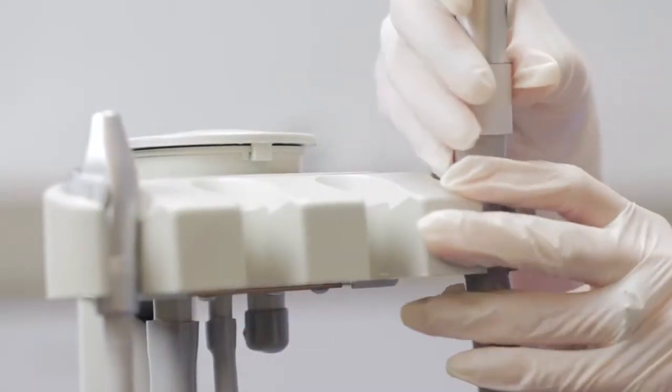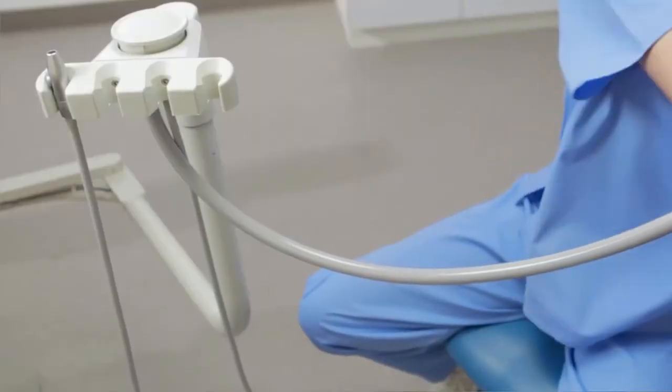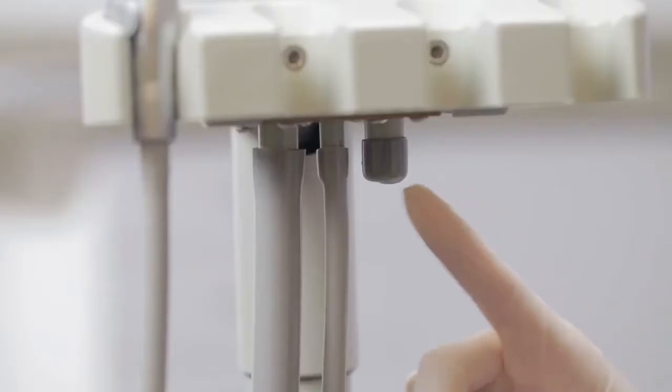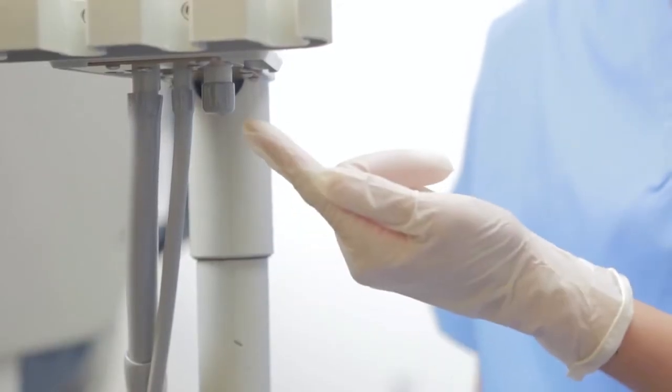Locate your vacuum canister. Follow the existing vacuum hose back to the vacuum canister. Most standard vacuum canisters come equipped with multiple HVE ports. Use an available port to install your ISO-Dry.